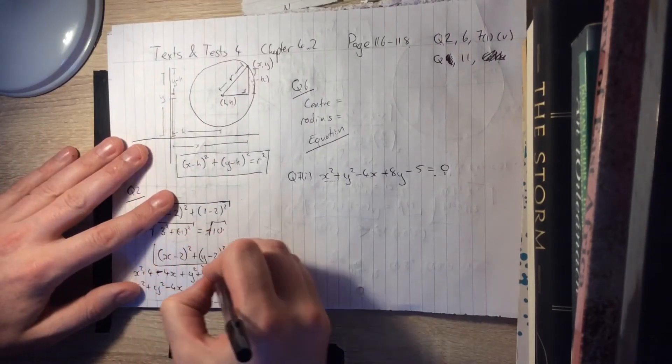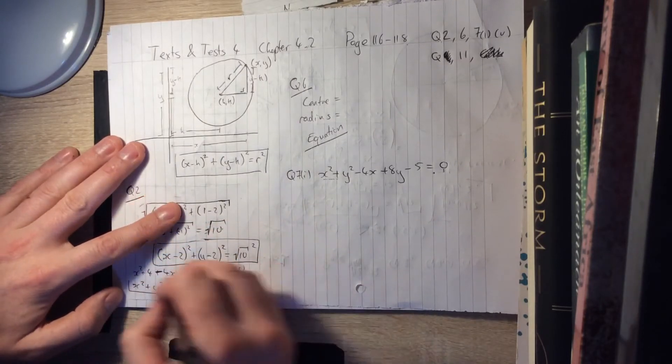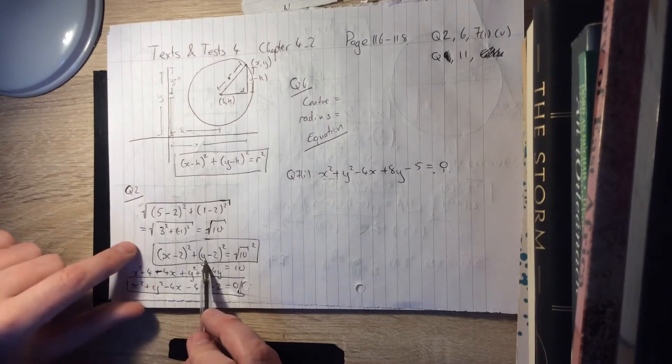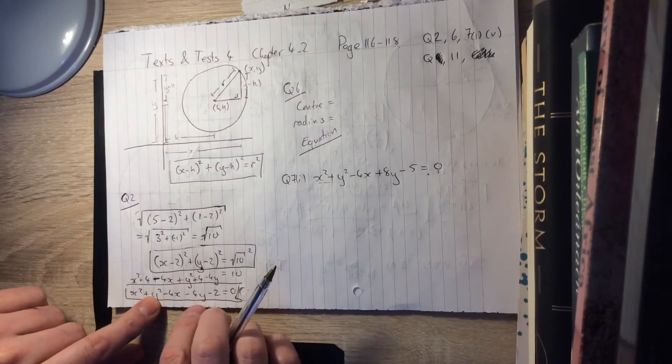So two versions of the equation of the circle there, either this one or this one. They're both good. They both work really well. I work mostly with this one, and I prefer this one. But you need to be able to work with both of them.